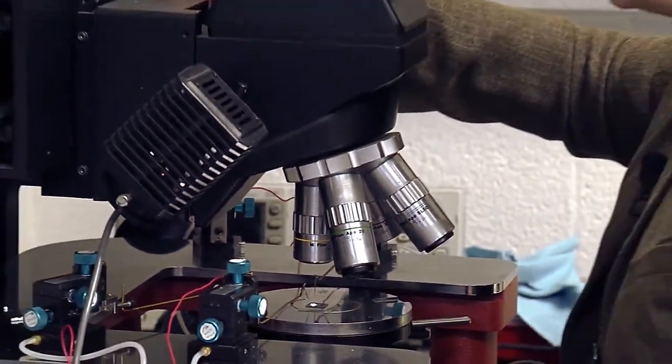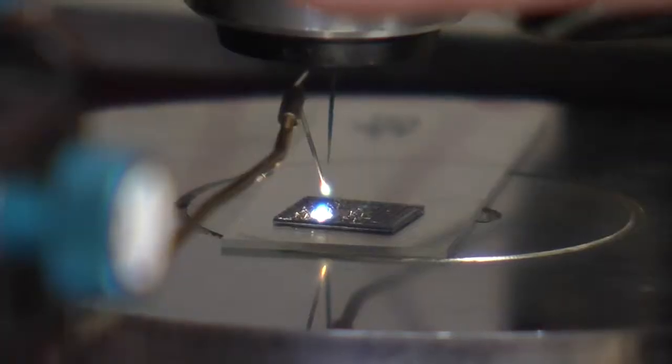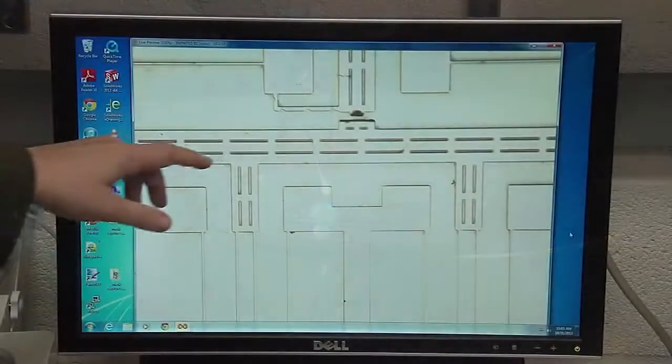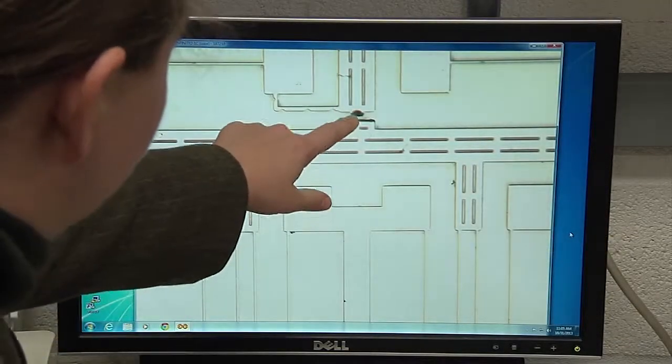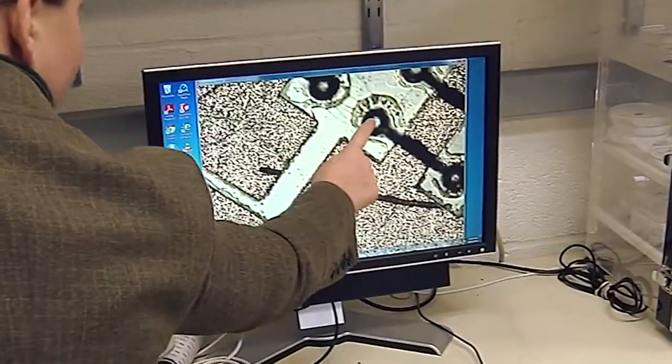Bergbreiter's robots are so small, her team uses a microscope to build them. They use the same processes that you use to make integrated circuits. These are two legs. This is the jumping mechanism.